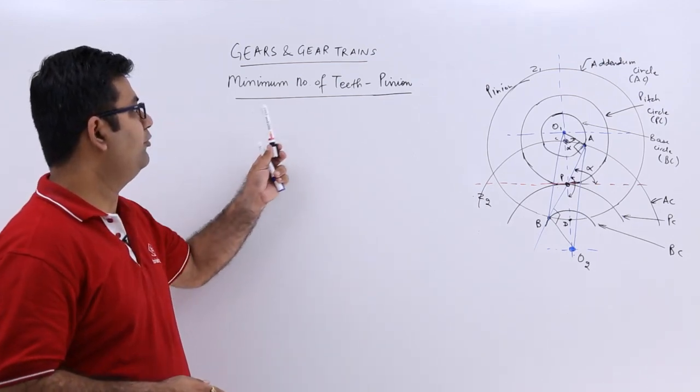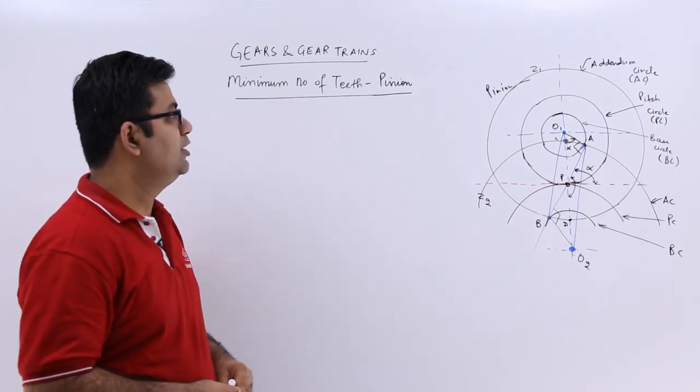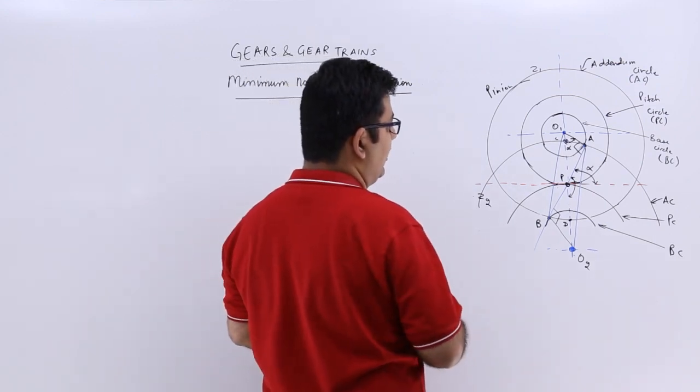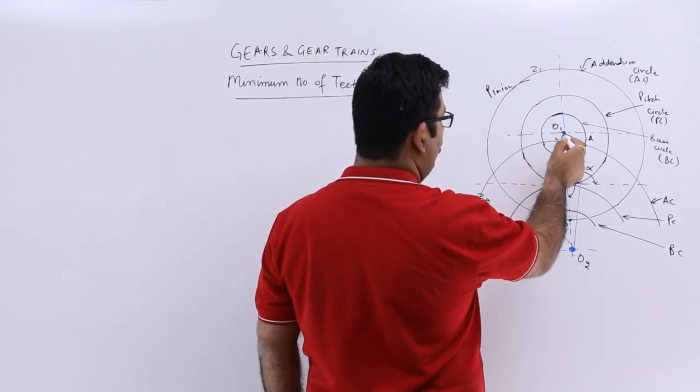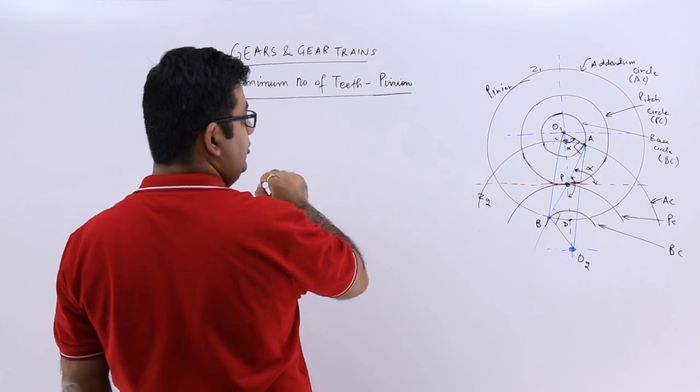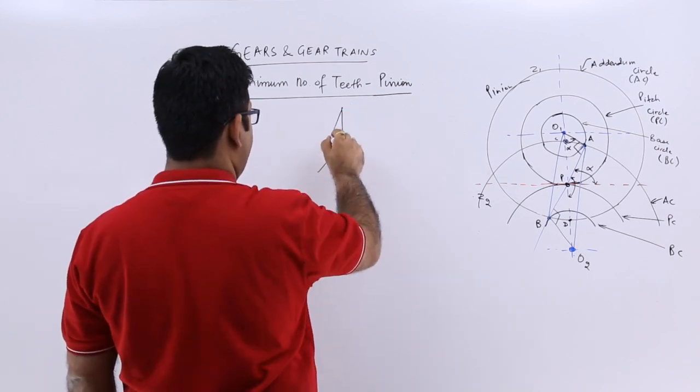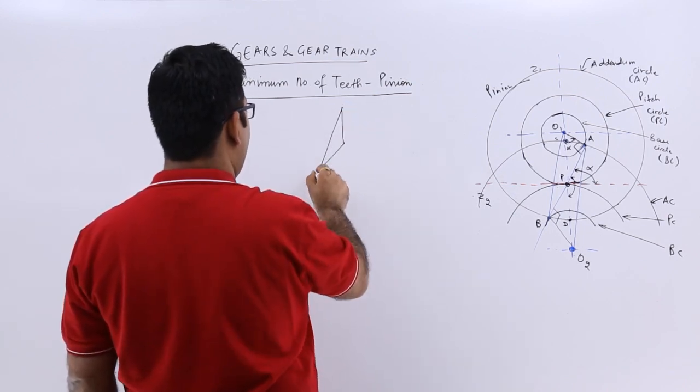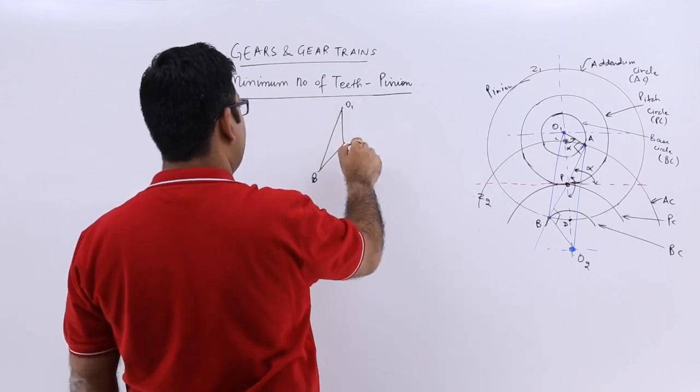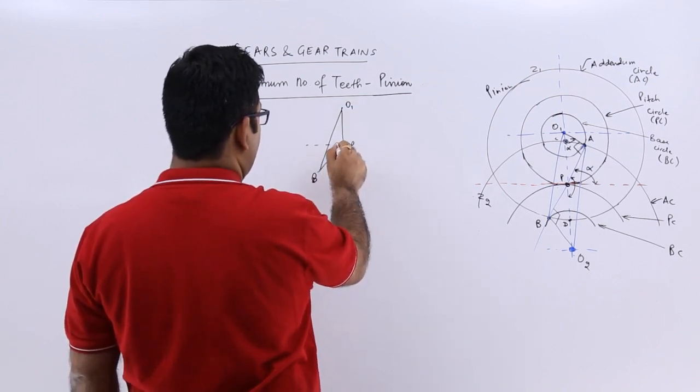Now let's talk about the minimum number of teeth on a pinion. For the pinion, I will take the triangle BO₁P. So you have this kind of figure which is B, O₁, and P.